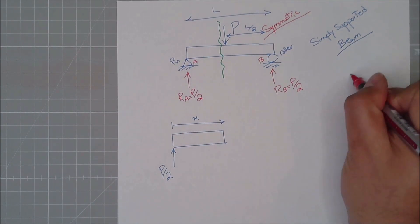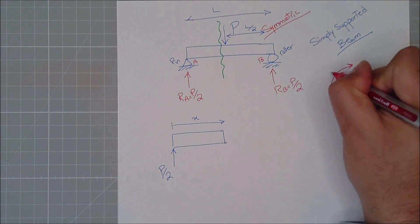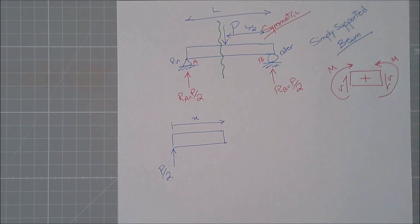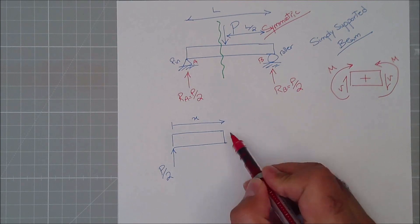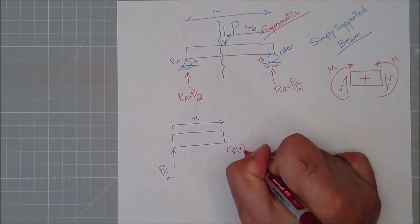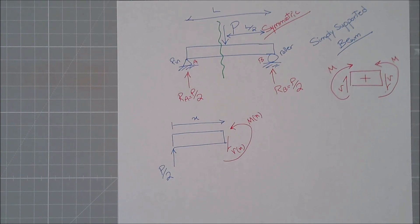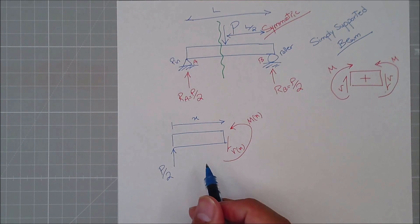What I do is apply the positive sign conventions for shear and moment. If you look at the lecture notes, these are the positive signs — you can draw them whenever you need to work out a shear or moment diagram. Since I'm cutting and looking at the left side, these define the positive directions. Now I simply write the equilibrium equations.